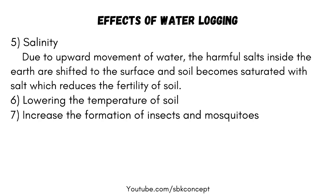Salinity: Due to upward movement of water, the harmful salts inside the earth are shifted to the surface and the soil becomes saturated with salt, which reduces the fertility of soil. Additionally, waterlogging lowers the temperature of soil and increases the formation of insects and mosquitoes.